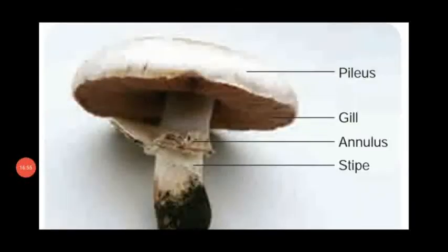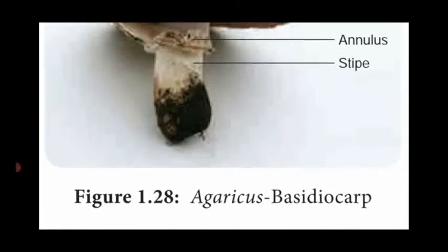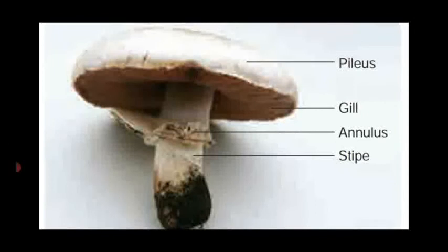This is the fruiting body of Agaricus fungi, otherwise named basidiocarp. In the basidiocarp, the tertiary mycelium is found. The basidiocarp consists of four important parts: a cylindrical stalk-like portion known as stipe, a ring-like structure on the stipe known as annulus, an umbrella-shaped structure at the tip of the stipe known as pileus, and the pileus is divided into a number of chambers or partitions named gills.